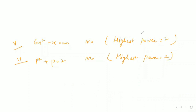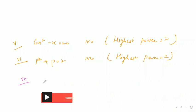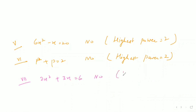Seventh part: 2x² + 3x = 6. It is also not a linear equation in one variable because the highest power is 2.